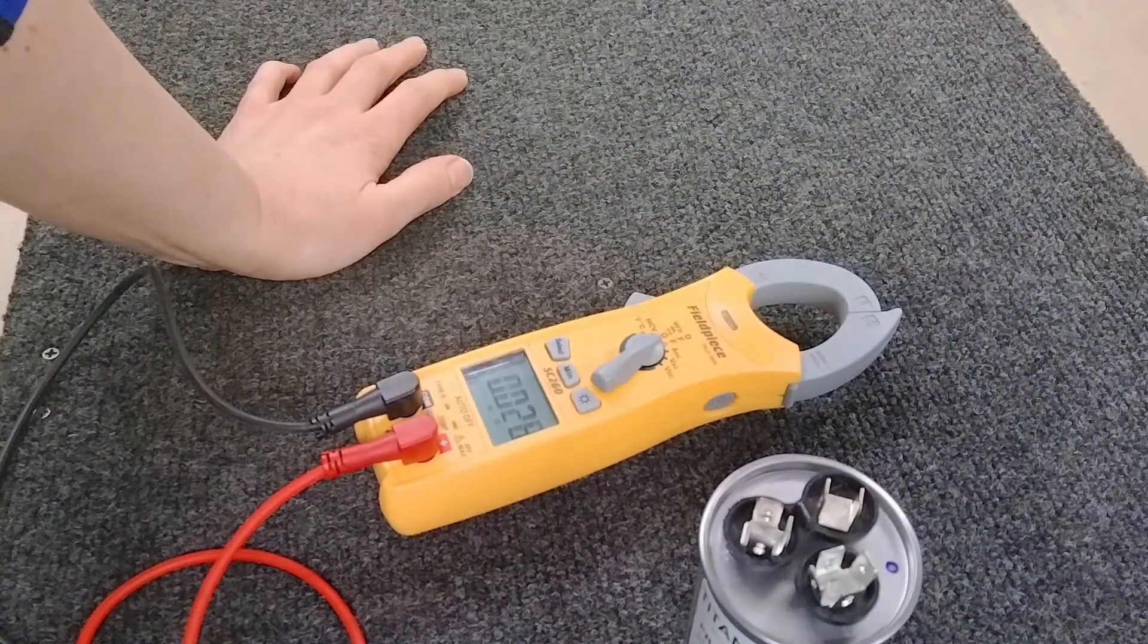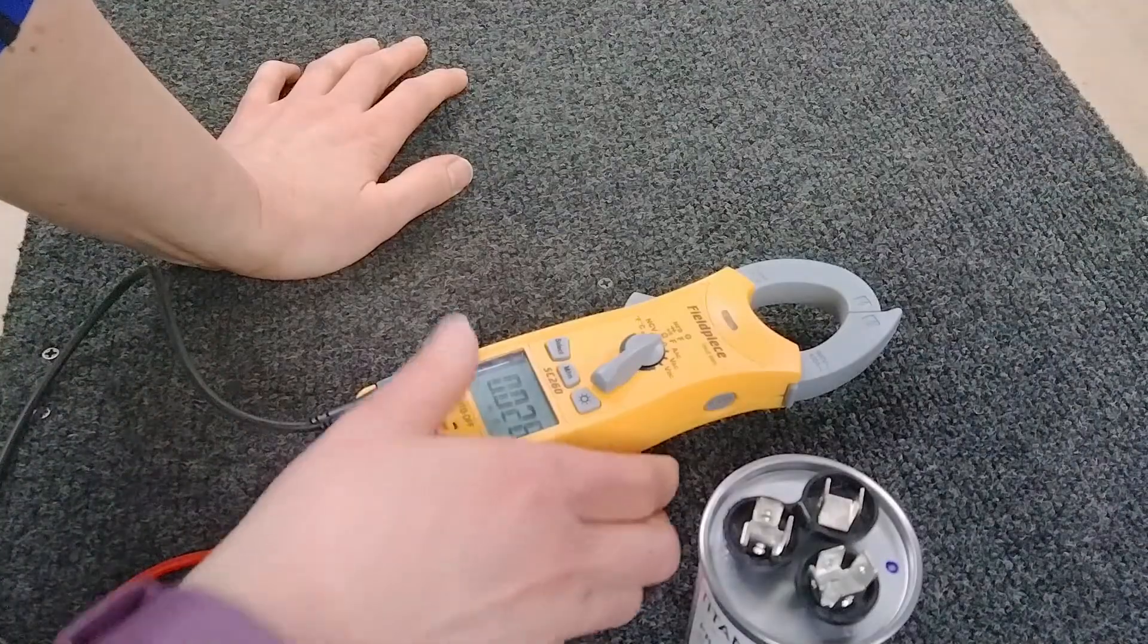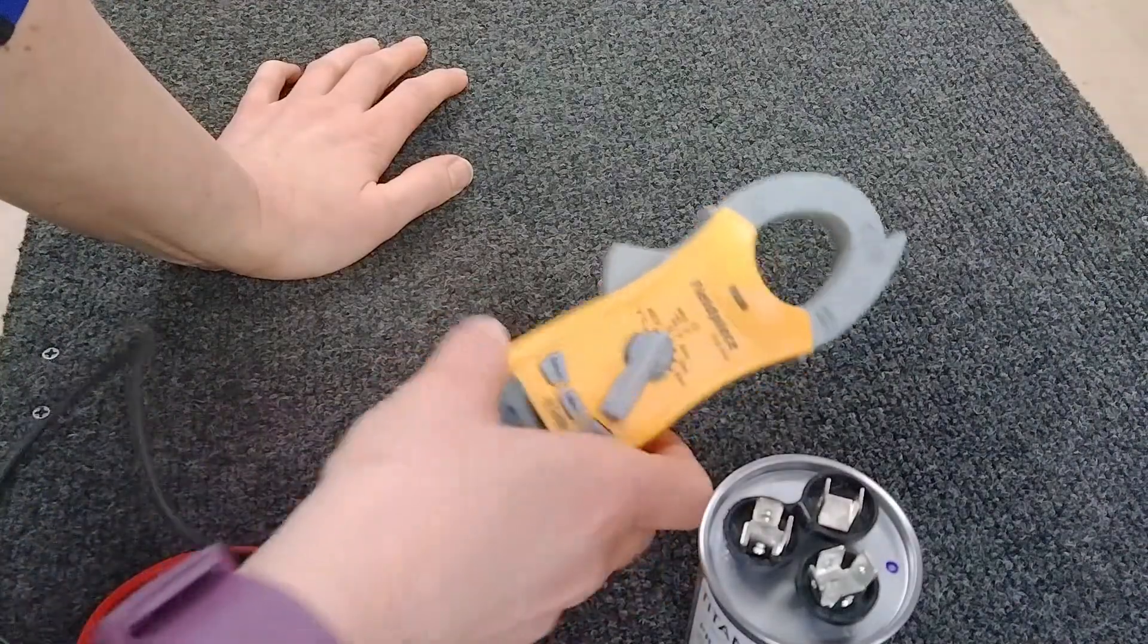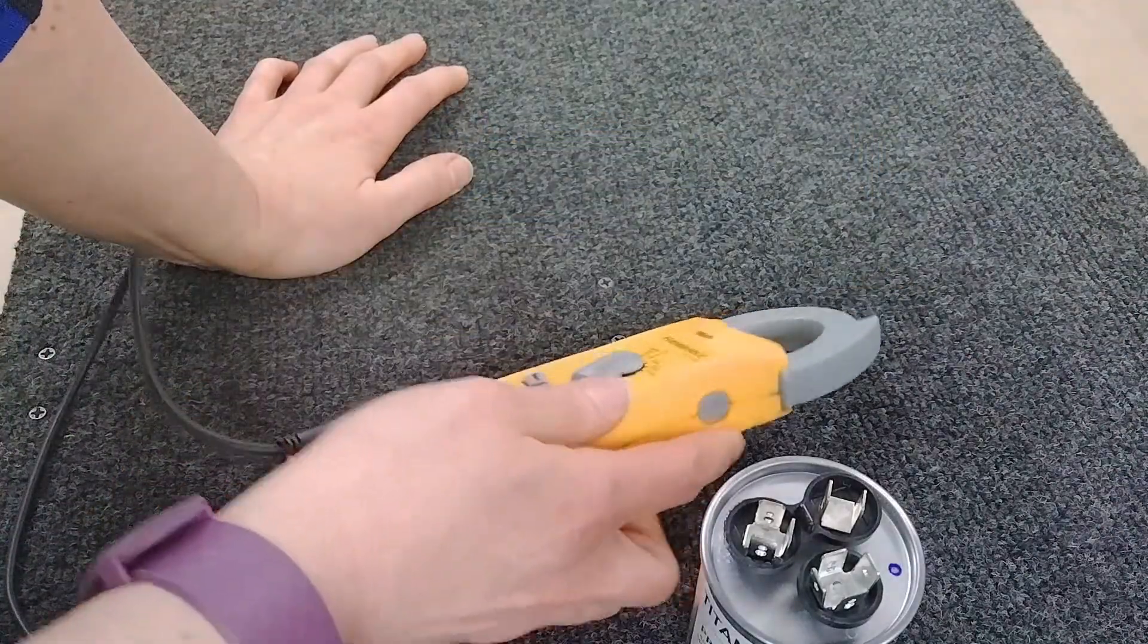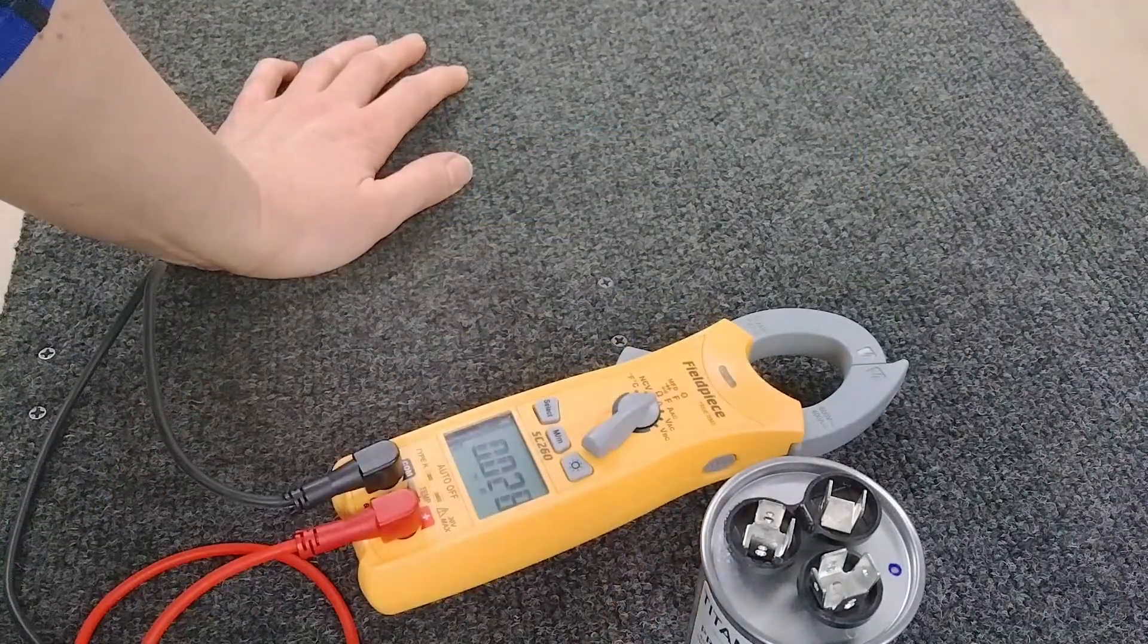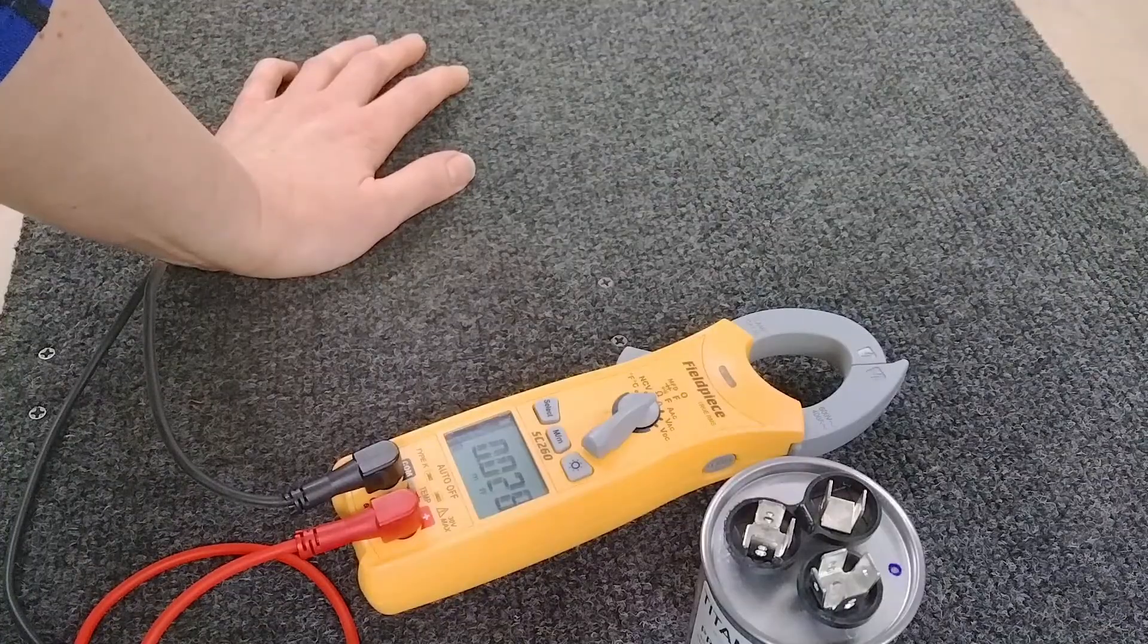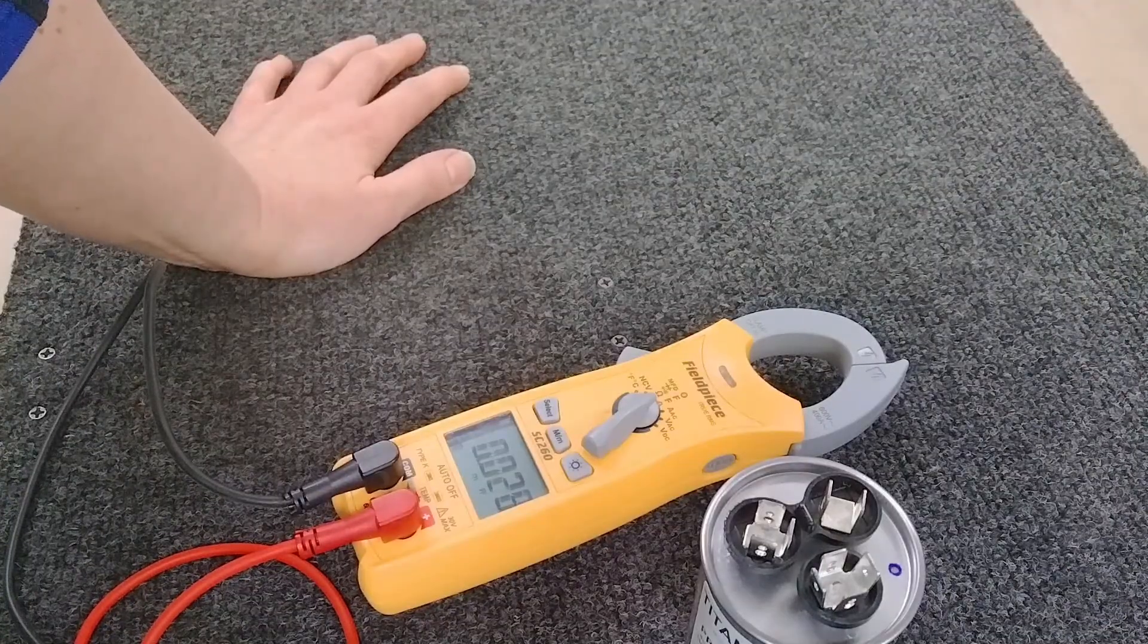The reason why a lot of people don't catch when a capacitor is bad is they use analog meters. An analog meter using ohms is only going to be able to tell you certain things.